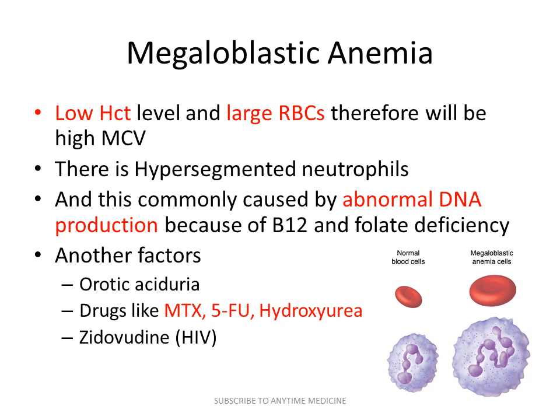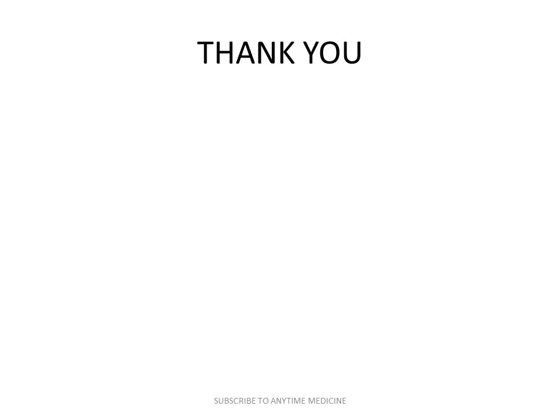Other factors that can cause megaloblastic anemia include orotic aciduria and certain drugs that inhibit DNA synthesis, like methotrexate, 5-fluorouracil, and hydroxyurea. HIV drugs like zidovudine can also inhibit DNA synthesis and develop megaloblastic anemia. The deficiency-related details for folate and vitamin B12 will be covered in the second part of this video.